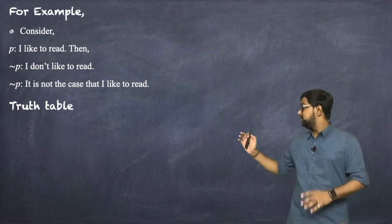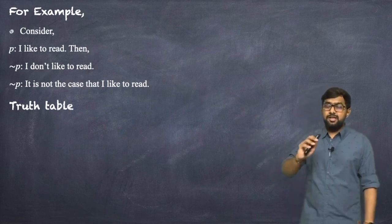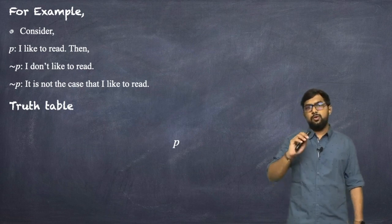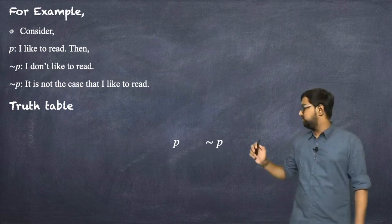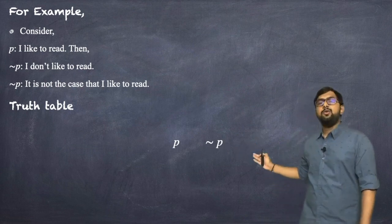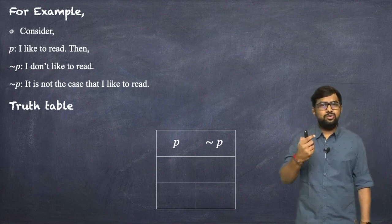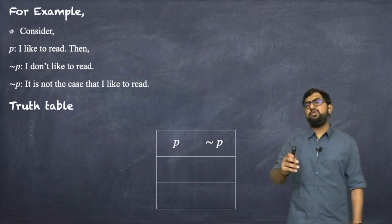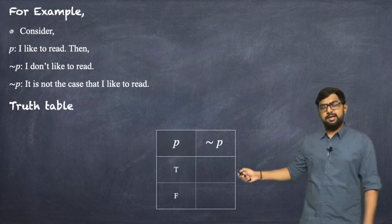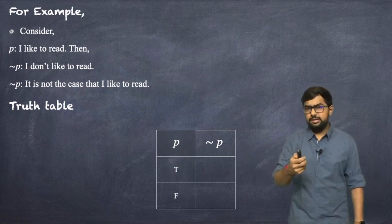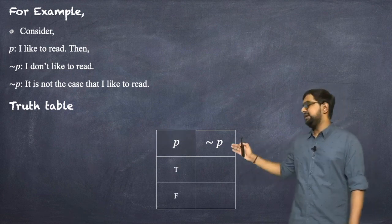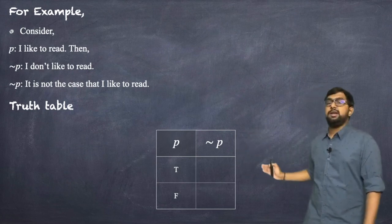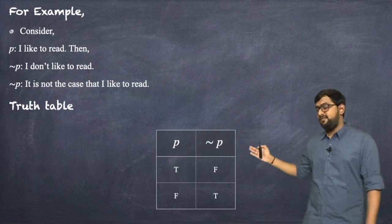Now let's construct the truth table. Since negation is a unary connective we have only one statement P, giving only two truth values: T and F. The table has columns P and not P. When P is T, not P is F; when P is F, not P is T — giving the pattern T F, F T.